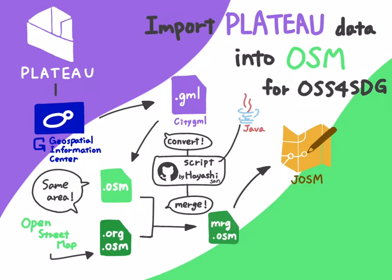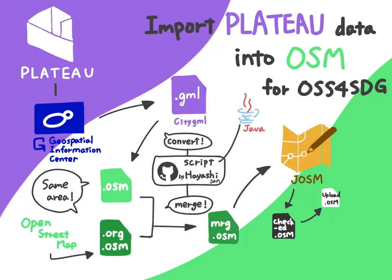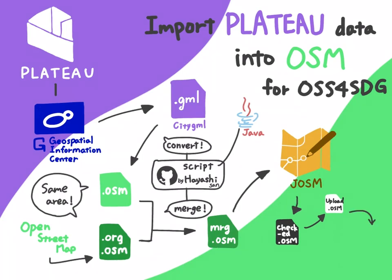Number 5. Save the check file as a format of check.OSM. Convert the saved check.OSM using JABB to upload.OSM for uploading. Number 6. Convert the saved check.OSM file to upload.OSM using JABB.